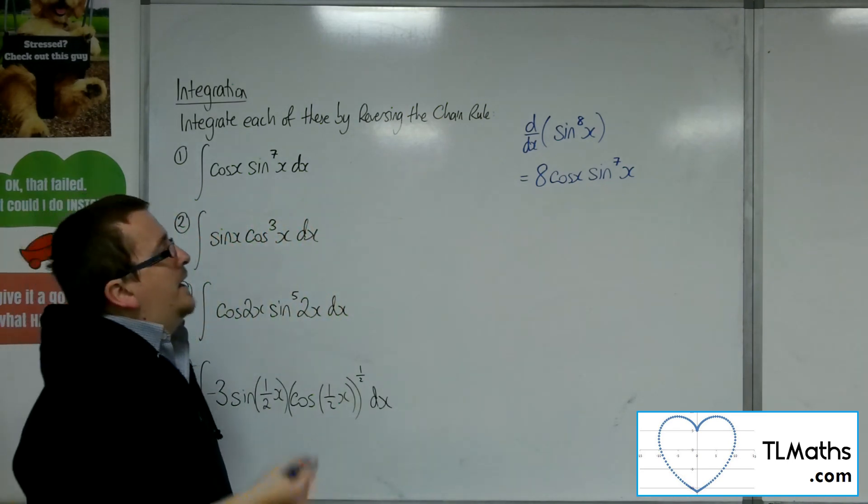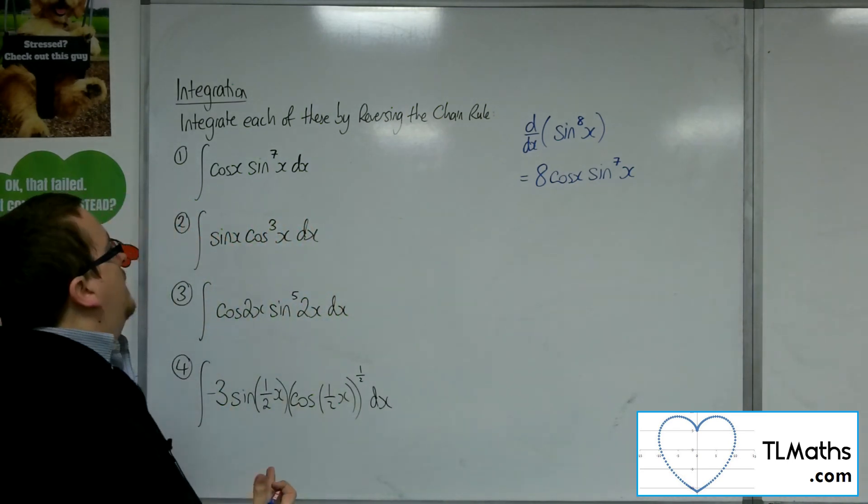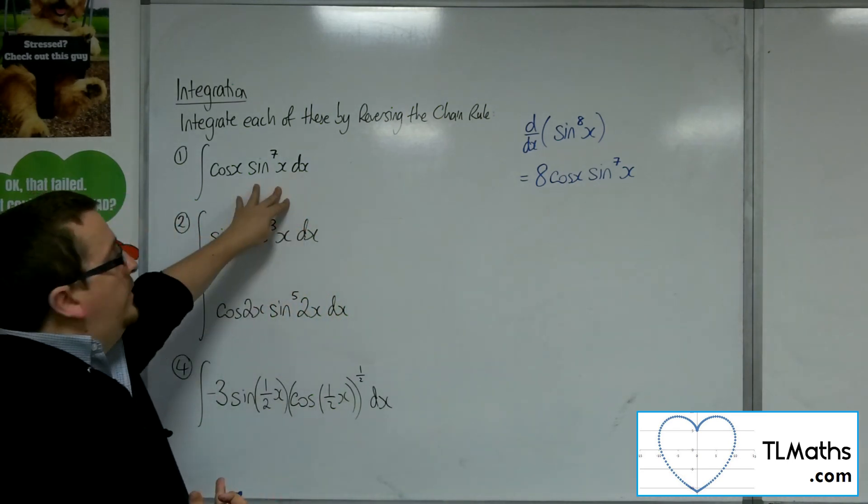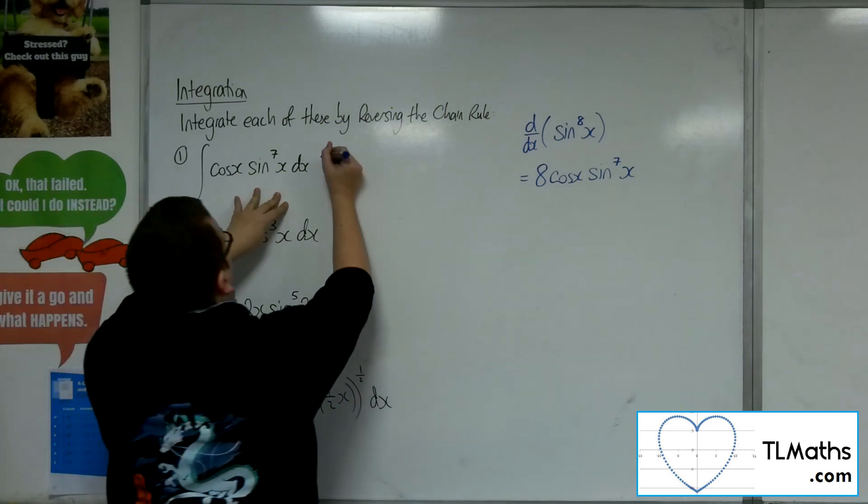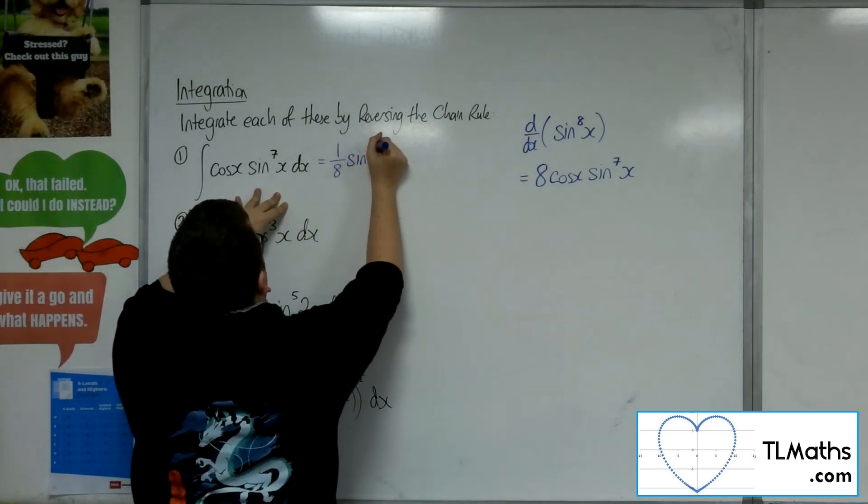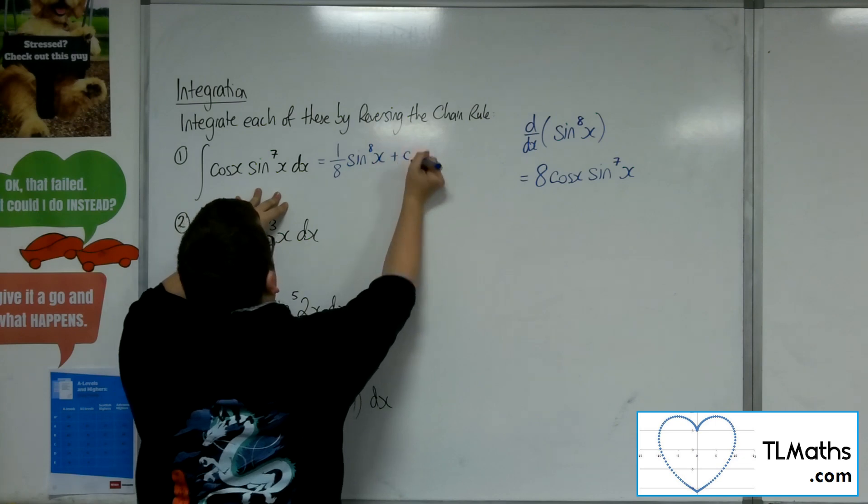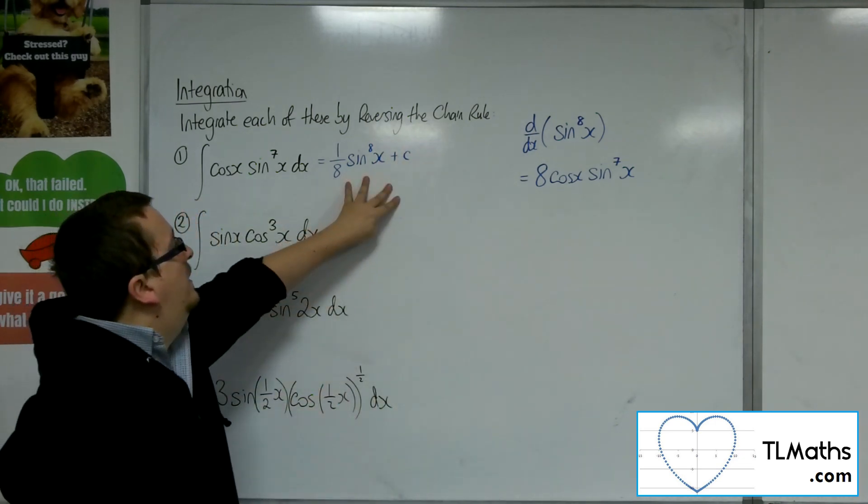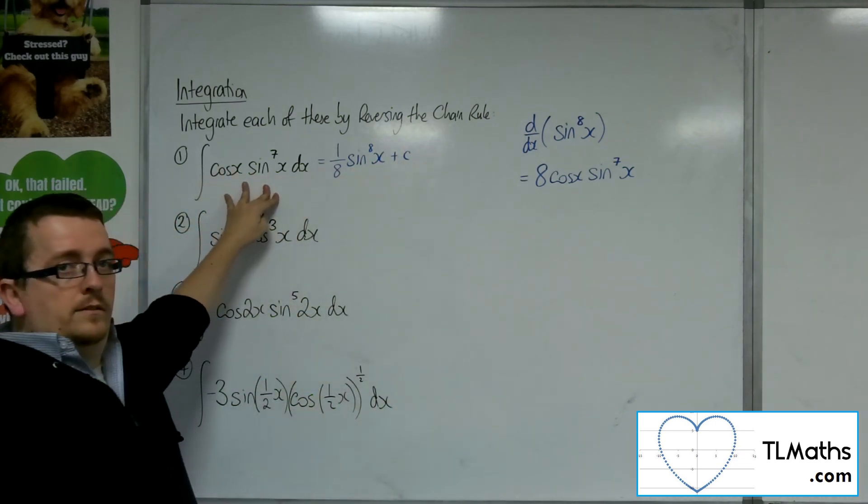OK, so 8 cosine of x sine to the 7x. So I've actually got 1 eighth of what I need. So this will be 1 eighth of sine to the 8x plus c. So that differentiates to that.